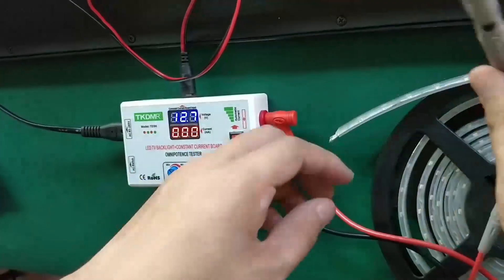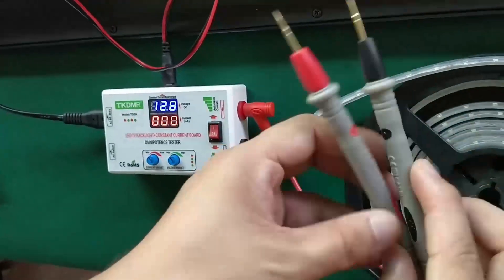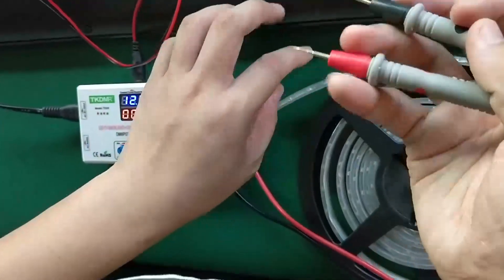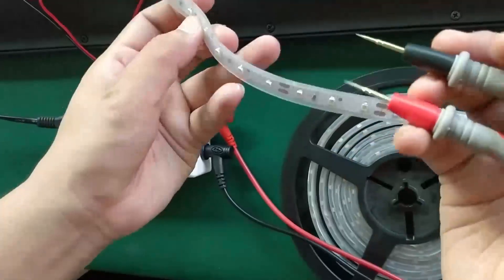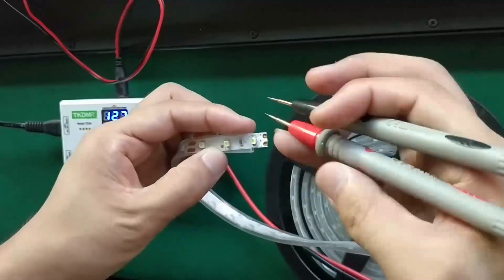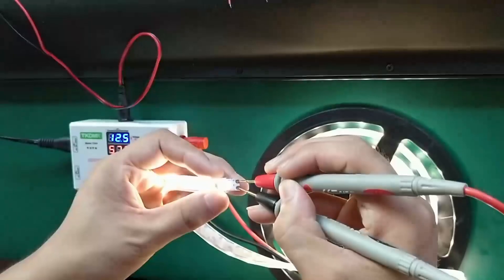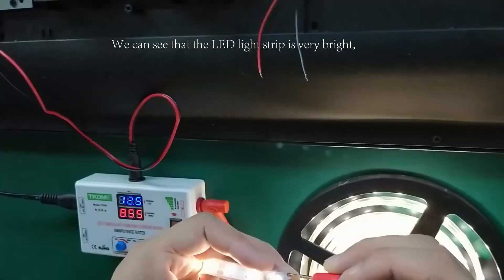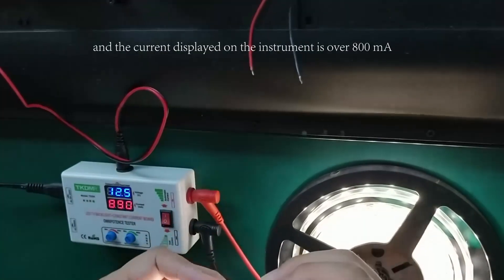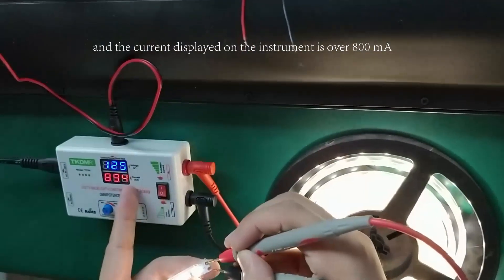Now we can test it. We can see that the LED light strip is very bright, and the current displayed on the instrument is over 800 milliampere.